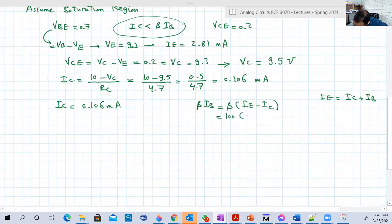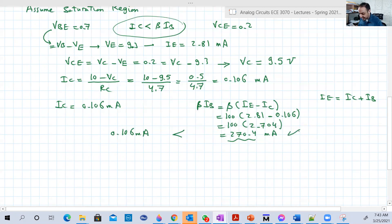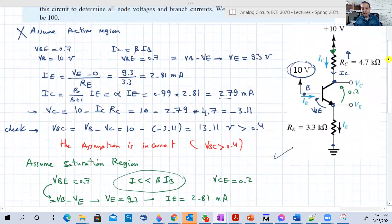So 100, and the IB is 2.81 minus IC which is 0.106. So this is basically 100 times 2.704, which is basically 270.4 milliamperes. Beta IB still has the dimension of amperes or milliamperes because beta is dimensionless, but IB has a dimension which is amperes. And apparently it's very clear that 0.106 is less than 270 milliamperes. So the assumption is correct, and our transistor is working in the saturation region.